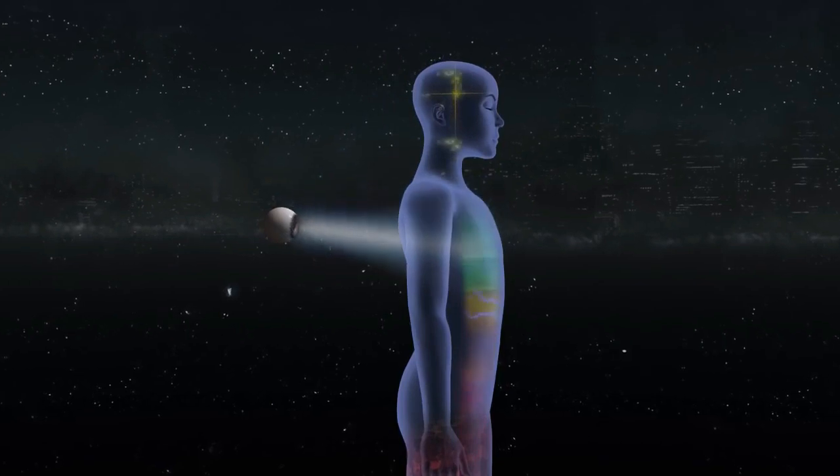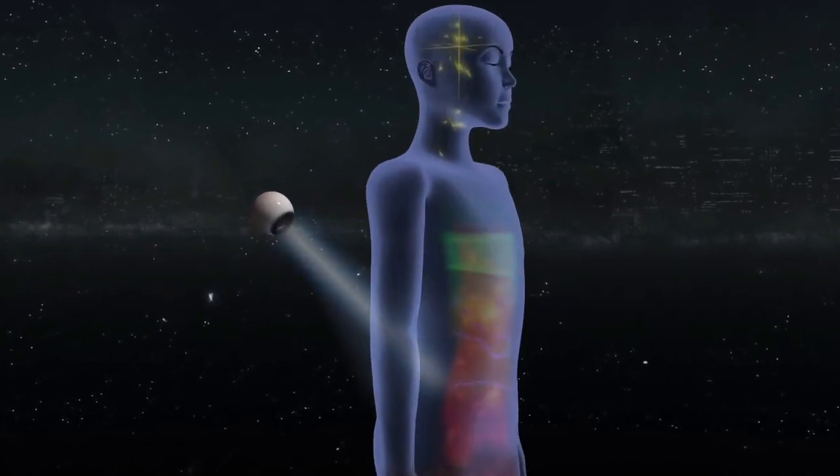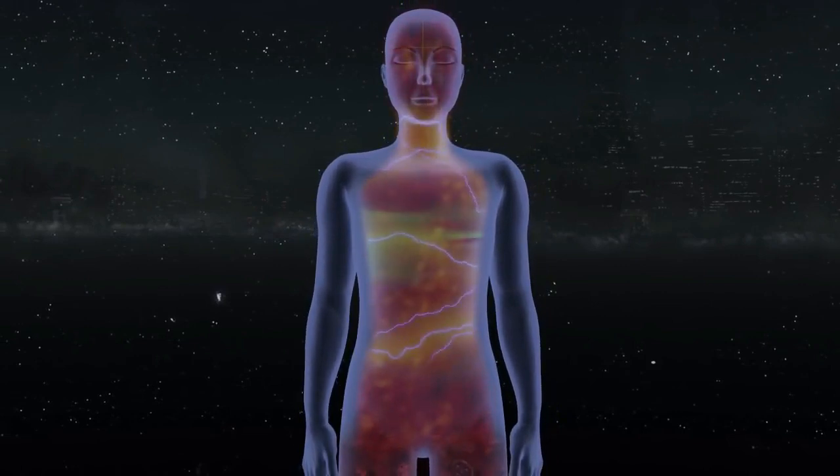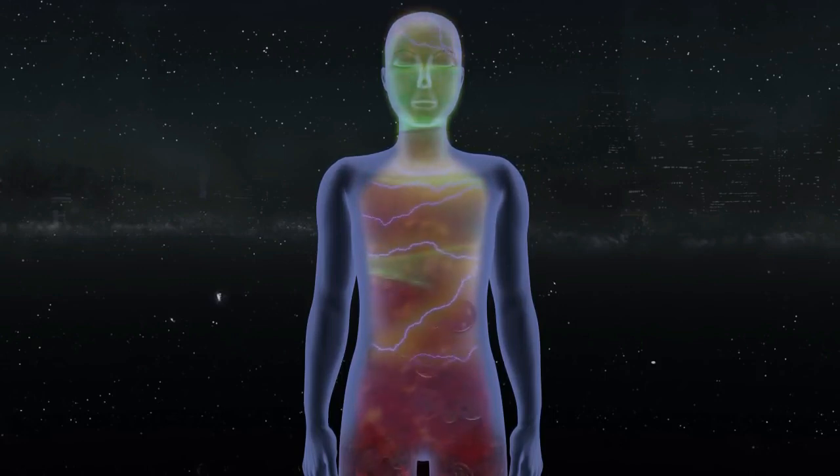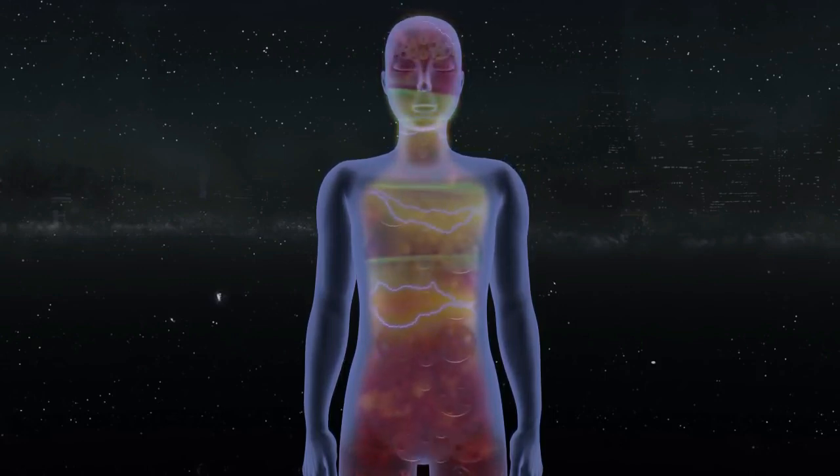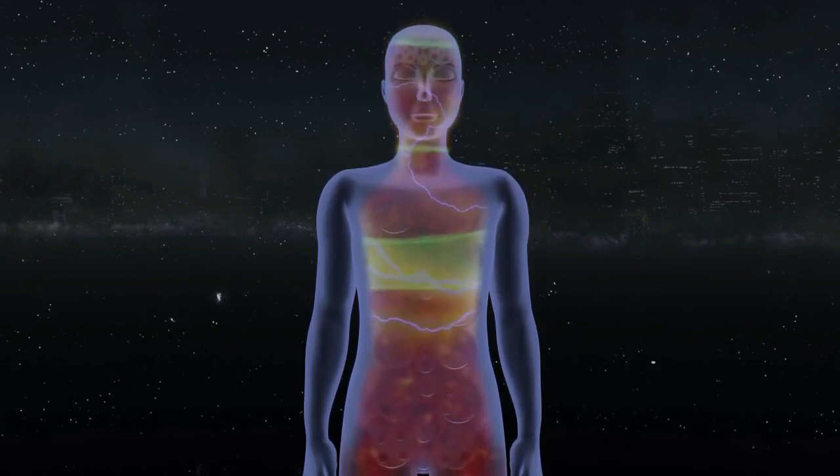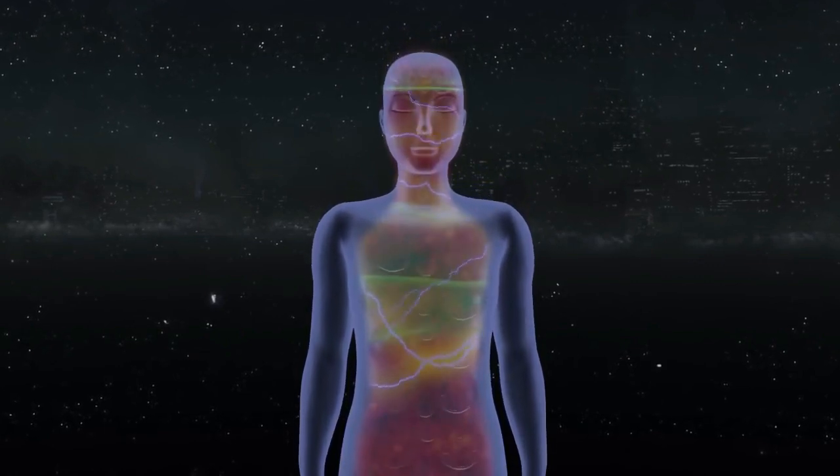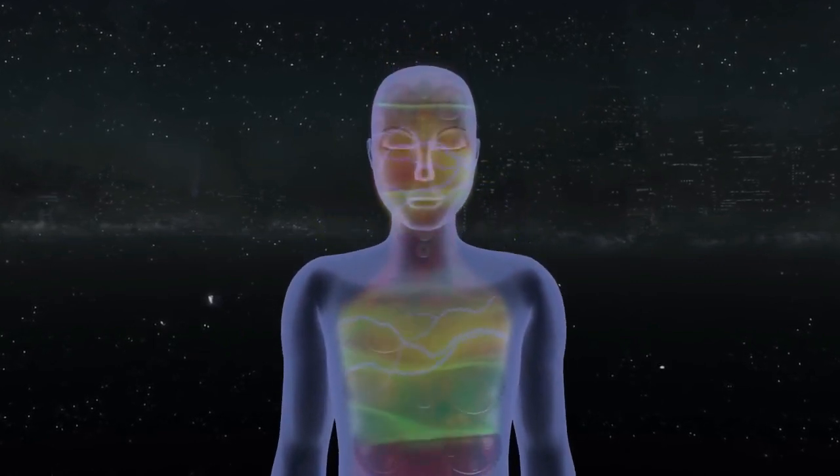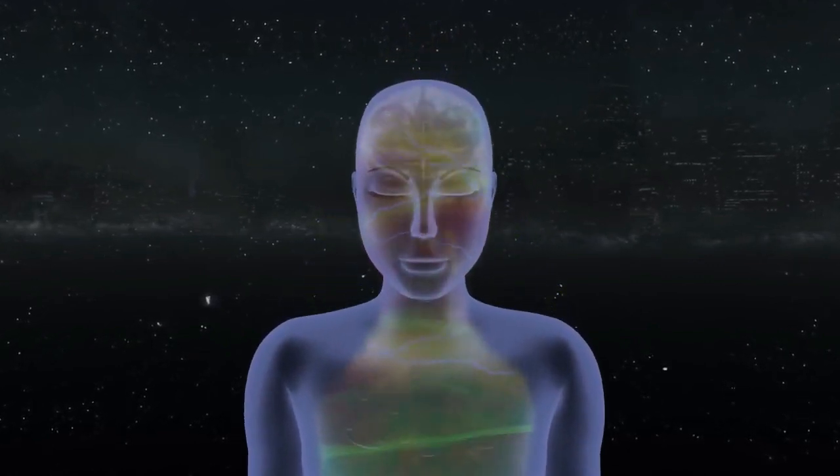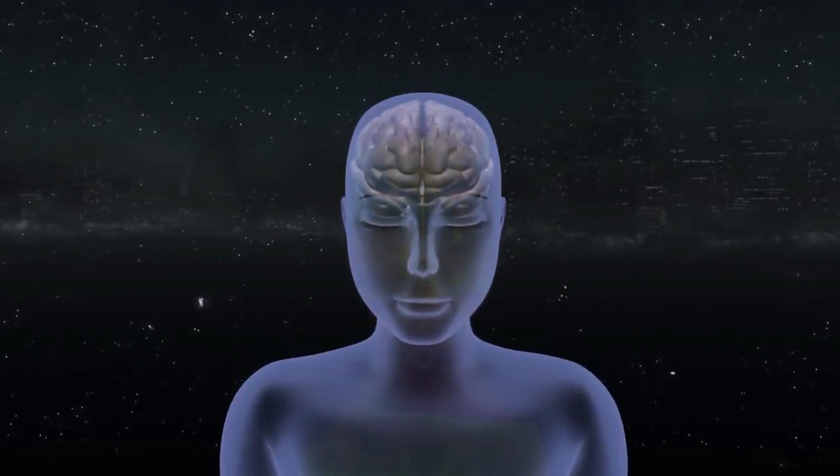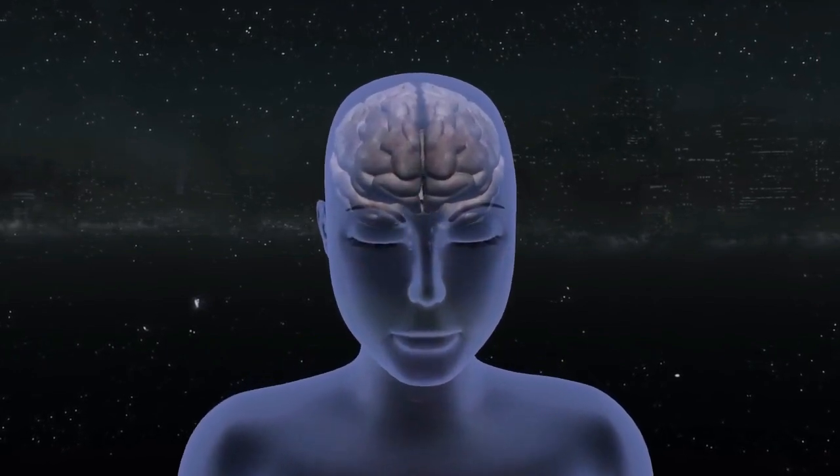Close observation can reveal the entangled workings of mental, vital and physical energies, often at odds with each other. Movements of the lower layers can confuse the functions of the higher layers. Mind is not material in essence, but in the human body, it operates primarily through the brain, a material organ.